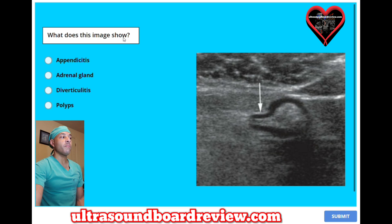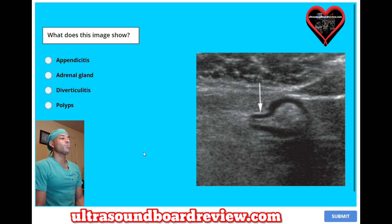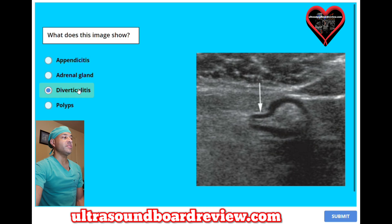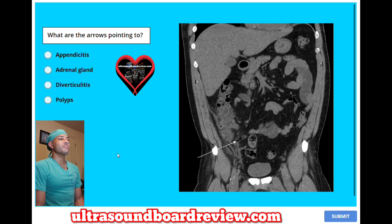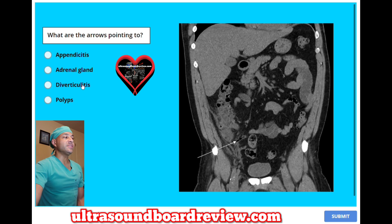What does this image show? A, appendicitis. B, adrenal gland. C, diverticulitis. Or D, polyps? What are the arrows pointing to? A, appendicitis. B, adrenal gland. C, diverticulitis. Or D, polyps? The answer is C, diverticulitis.